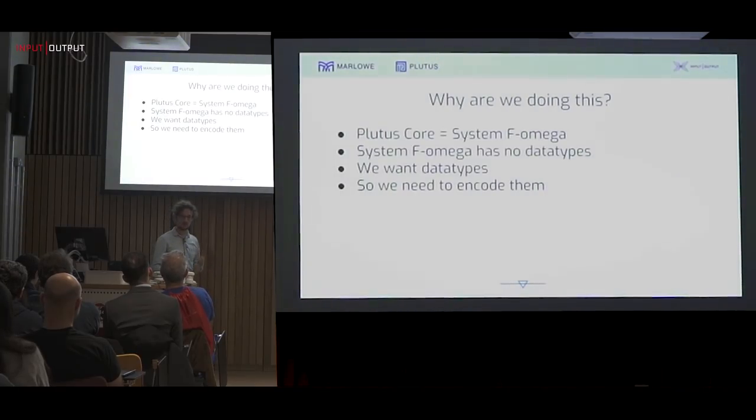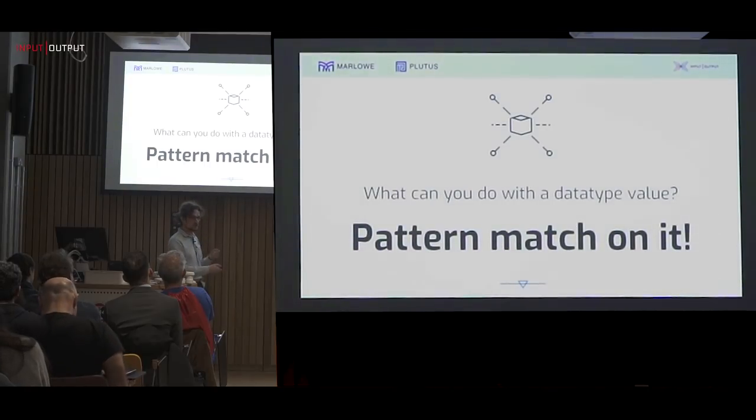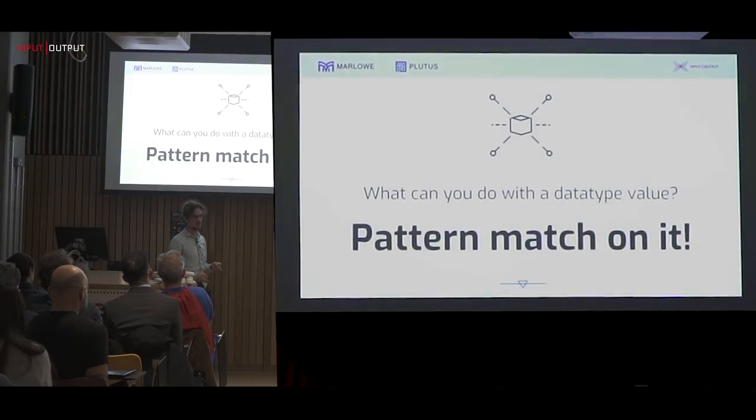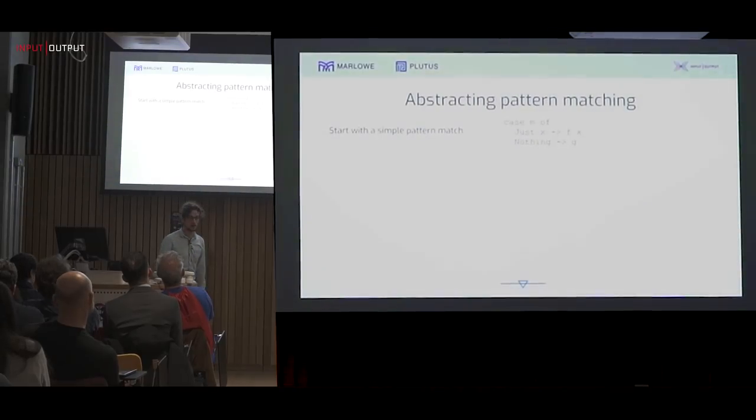The most famous is the church encoding, but that has some fairly serious efficiency problems. So we don't use that. Instead, we use what's called the Scott encoding. The Scott encoding is based on one key insight, which is that we can characterize a value of a data type by what we can do with it. And what's the thing that you can do with a data type value? You can pattern match on it.